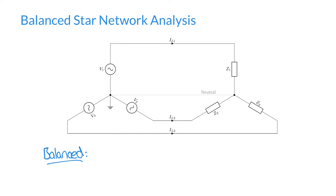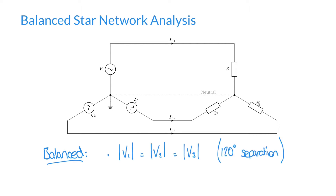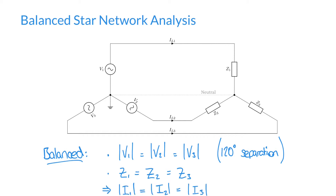We're assuming a few things. Firstly, we're assuming that the voltages which supply this network are of equal magnitude and that they're equally separated by a phase angle of 120 degrees. The second thing we're assuming is that the impedances in this network are equal — we have three impedances making up our load and we're assuming they're all equal. If both conditions hold, then the currents that flow in this network will also be of equal magnitude.